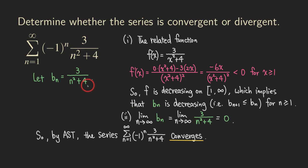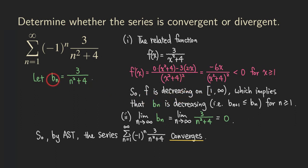Sometimes we can also show that b_(n+1) ≤ b_n by algebraic manipulation, just by directly comparing the two terms. But we can also use the related function approach: take its derivative and show it's negative for x greater than or equal to some number — in this case, 1. If the related function is decreasing, then the b_n terms are also decreasing. The limit part is quite easy. If you like this video, please subscribe to my channel for more math videos. Thank you for watching — see you next time!